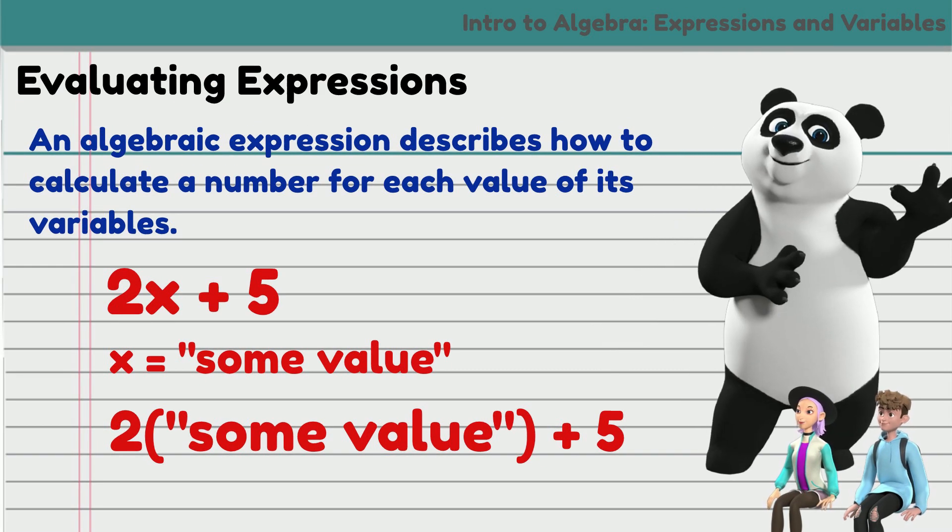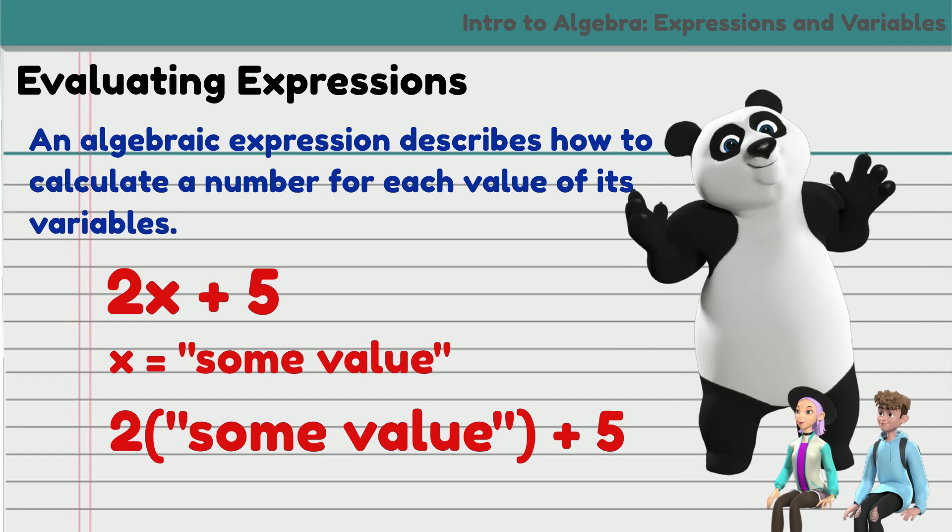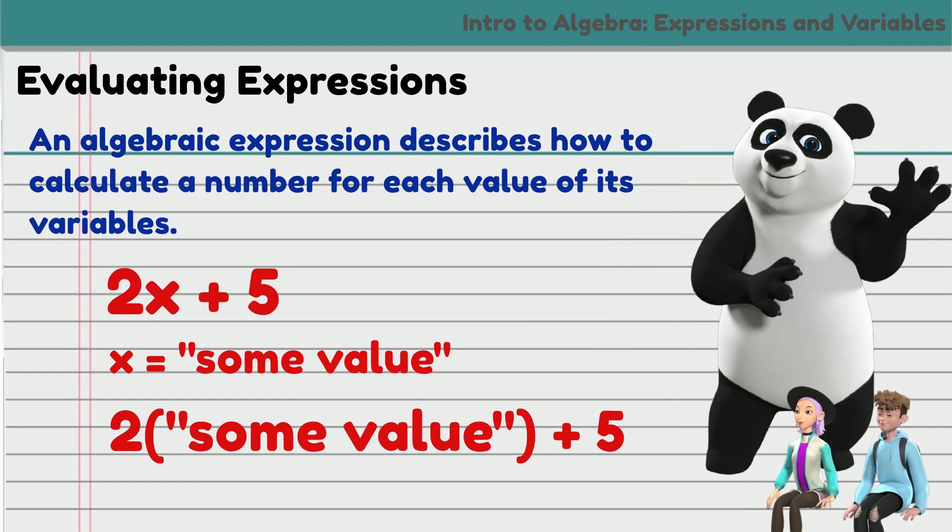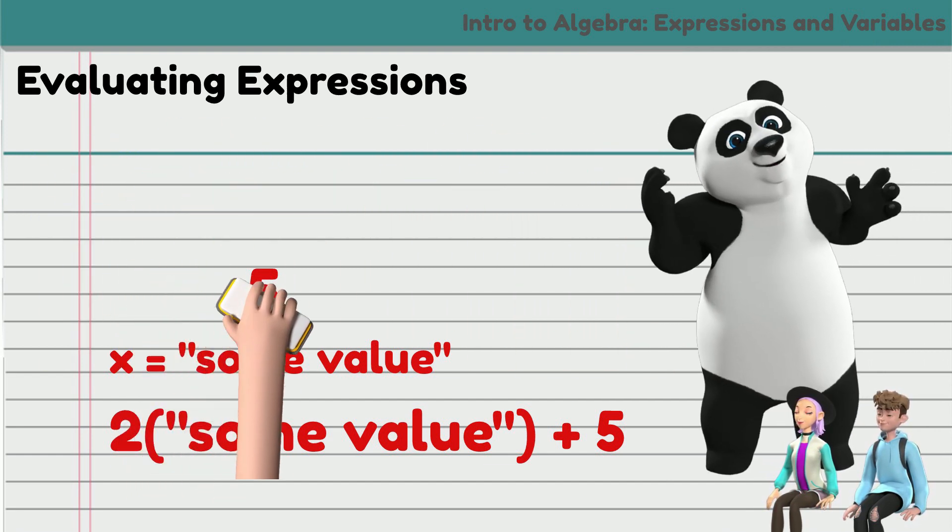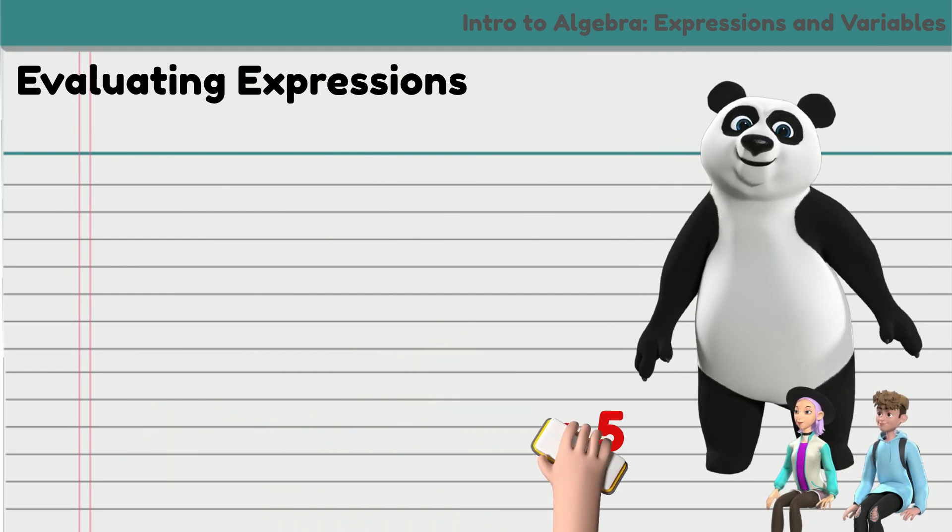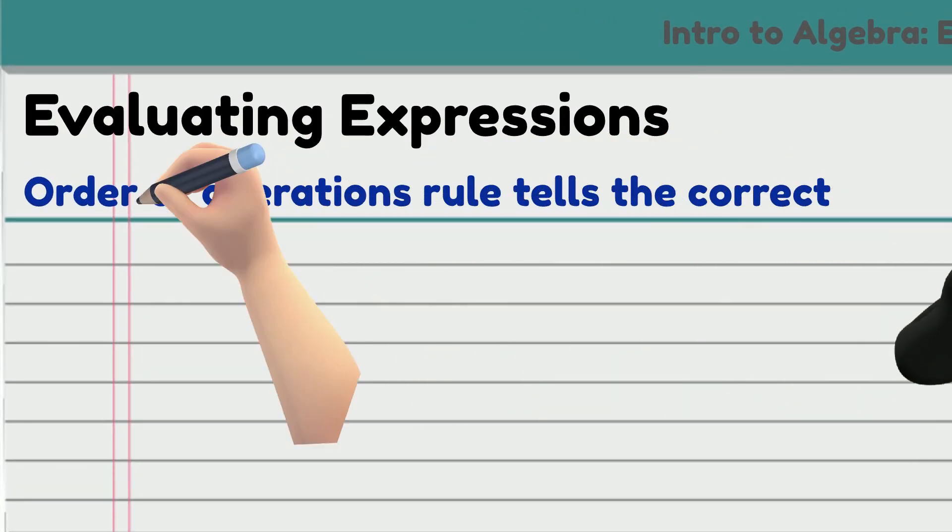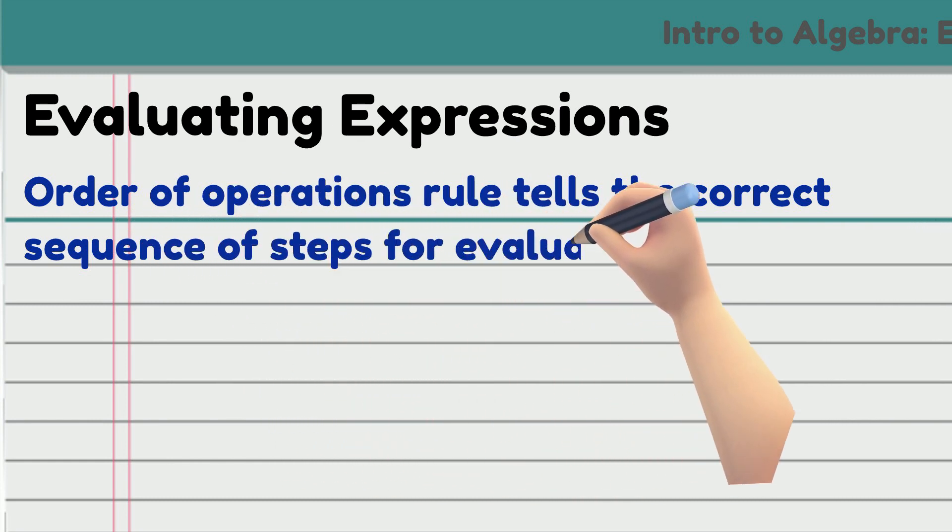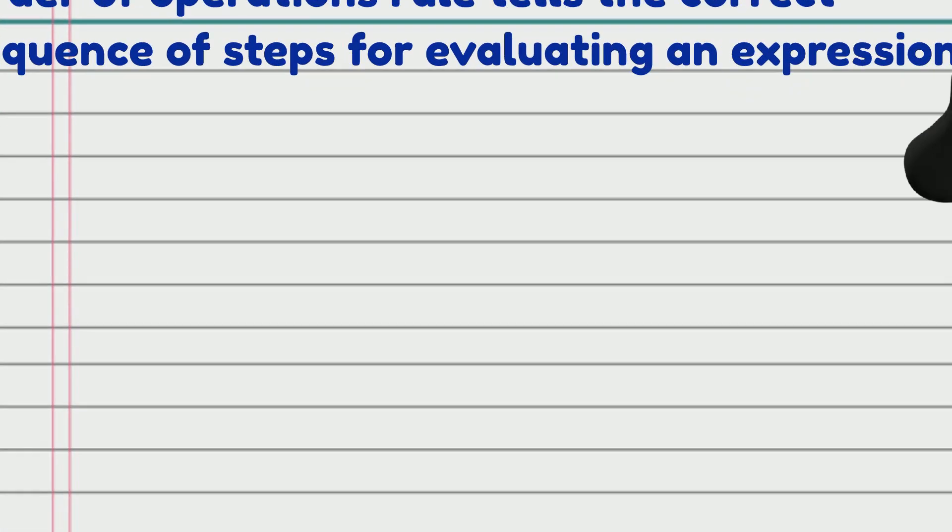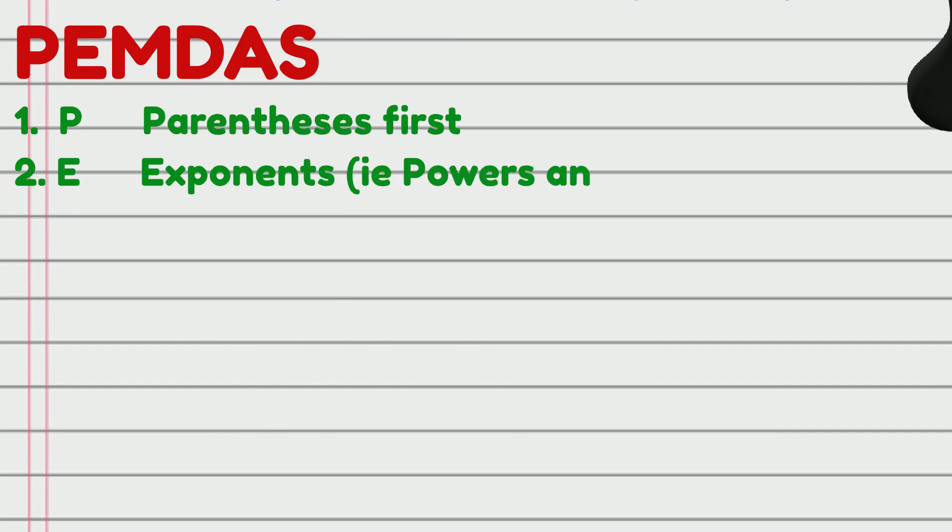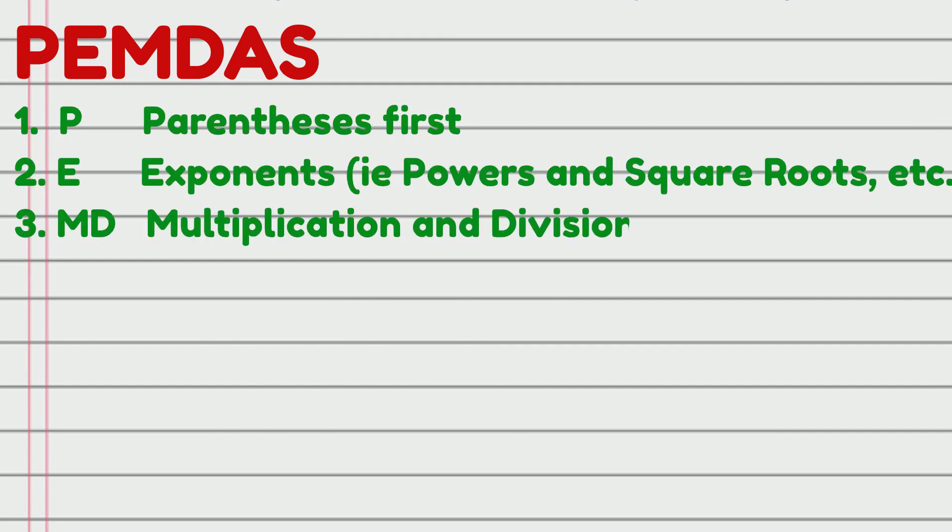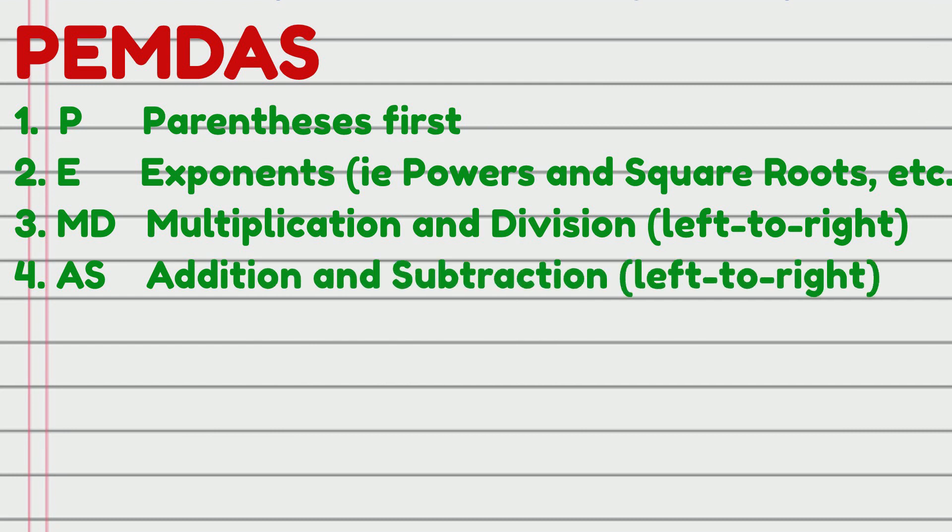But wait, before we go ahead with evaluating sample algebraic expressions, we first need to remember that we must follow the order of operations rule. The order of operations is a rule that tells the correct sequence of steps for evaluating an expression. We can remember the order, using PEMDAS, which means parentheses, exponents, multiplication and division from left to right, addition and subtraction from left to right.